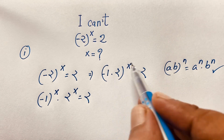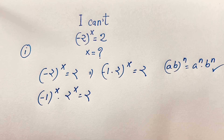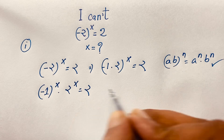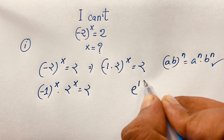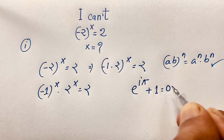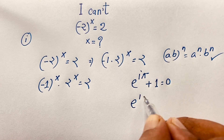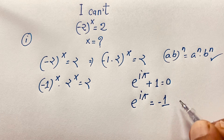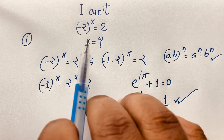So (-1)^x times 2^x is equal to 2. Now we need to handle (-1)^x. We know Euler's identity: e^(iπ) + 1 = 0, which means e^(iπ) = -1. So we can substitute -1 with e^(iπ).